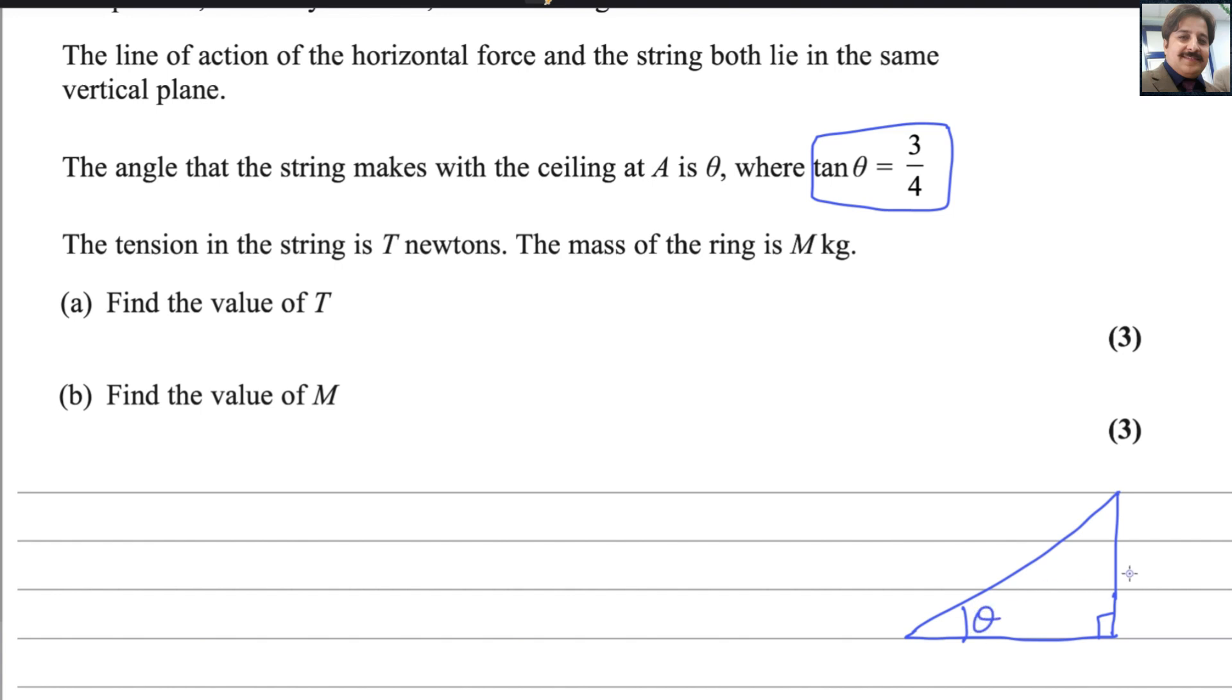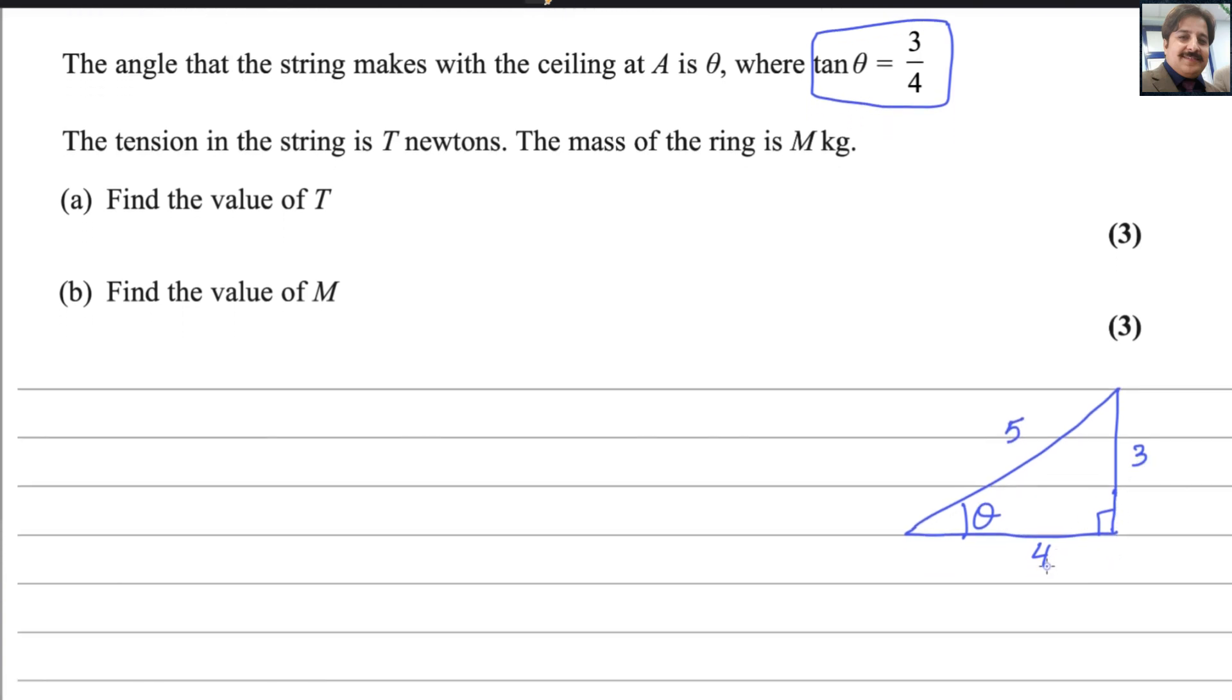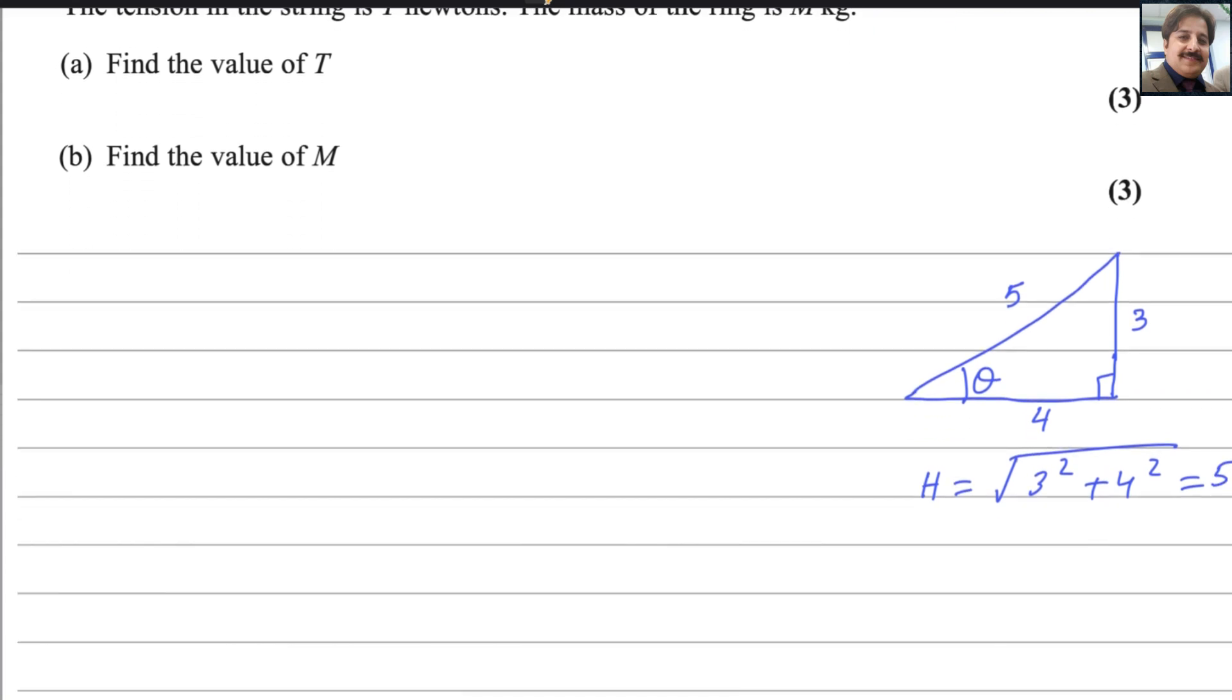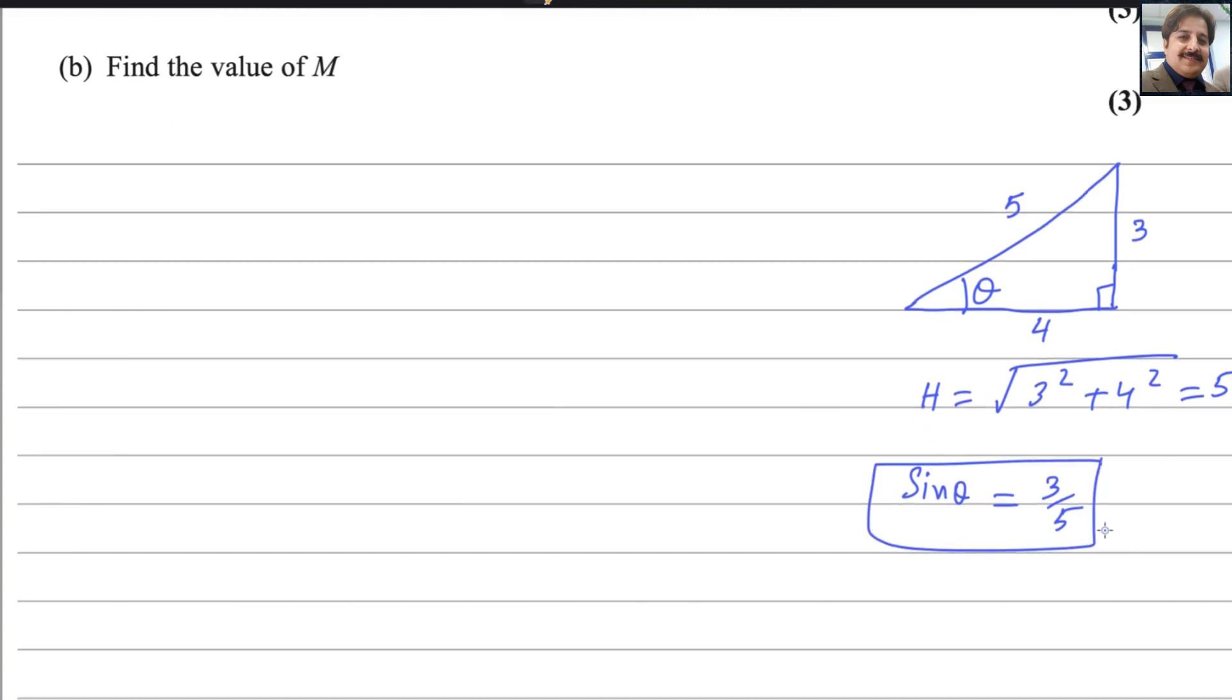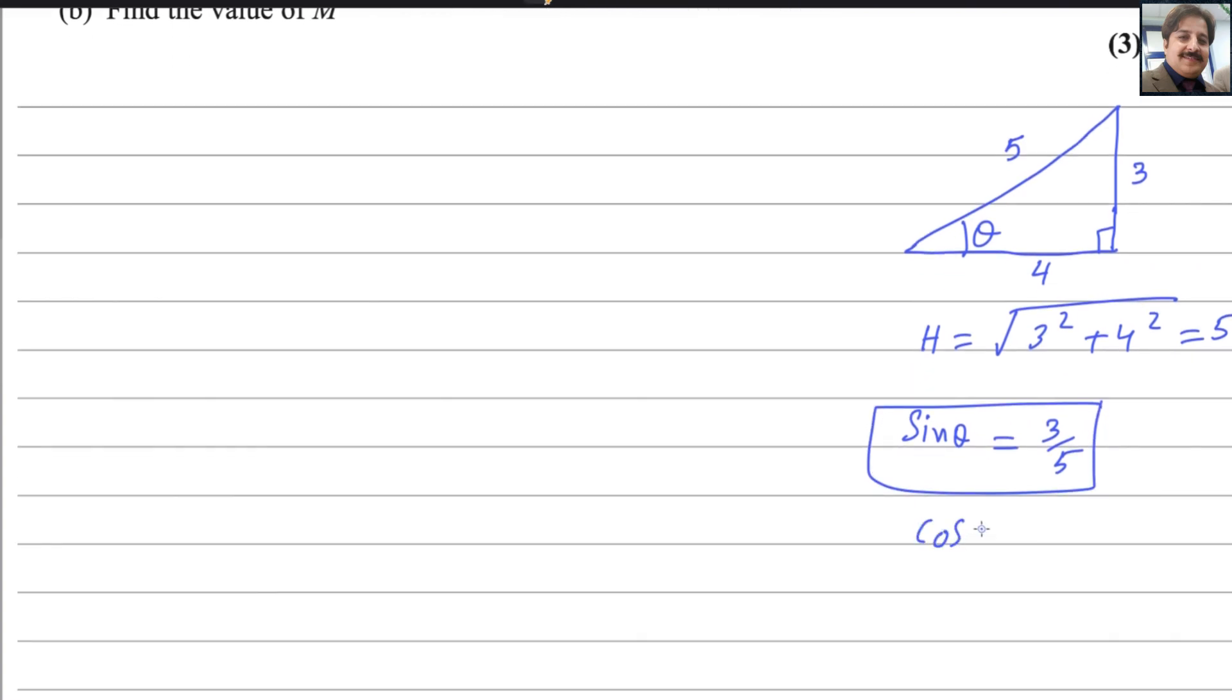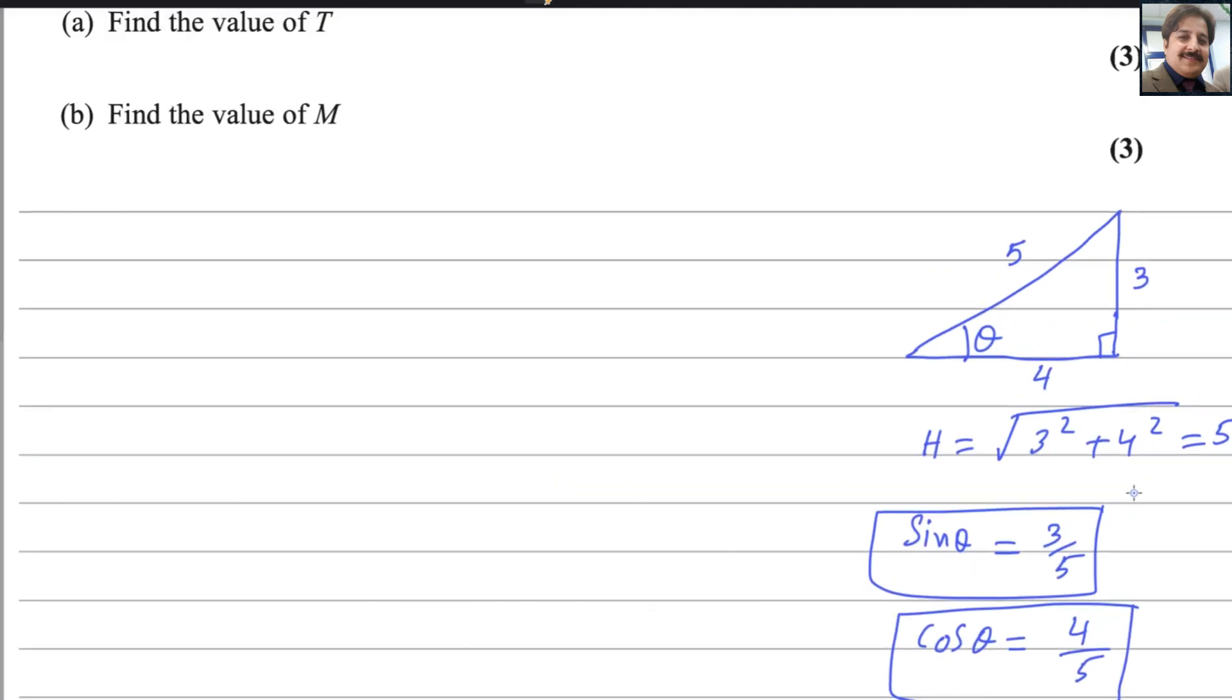First of all, I will find the other trigonometric ratios sine theta and cosine theta. I will draw a rough triangle here. This is theta and we know that tan is opposite over adjacent. This is 3, this is 4. By Pythagoras theorem, we can find this one 5. 3 squared plus 4 squared equals 5. Now all the sides are given. You could find the value of sine theta, that is 3 over 5, and cosine theta, that is 4 over 5.